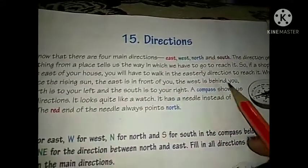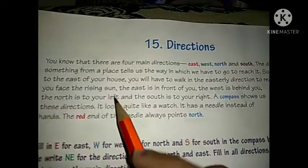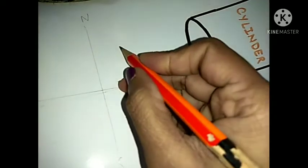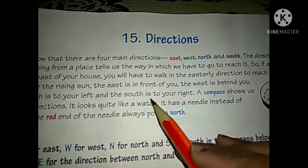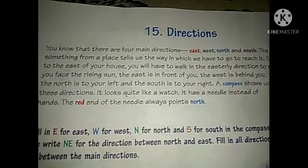West is just behind you — whatever is directly behind you is West. Now, when you are facing East, your right hand is to one side and left hand to the other. The North is to your left side, and the South is to your right side.